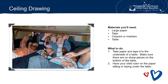Ceiling drawing, sometimes referred to as Michelangelo painting — but you don't want to use paint. Materials you'll need: large pieces of paper, tape, crayons or markers, and some tables. Tape the paper to the underside of the table, making sure there are no sharp edges on the bottom. Then you and your child can lay down or crouch under the table and color on the paper from below. So ceiling drawing.